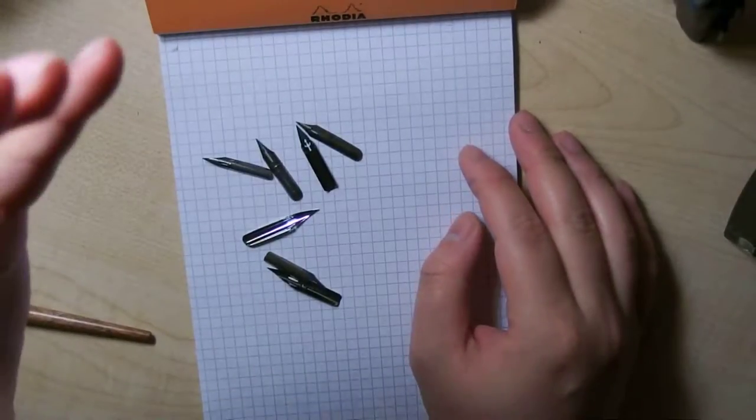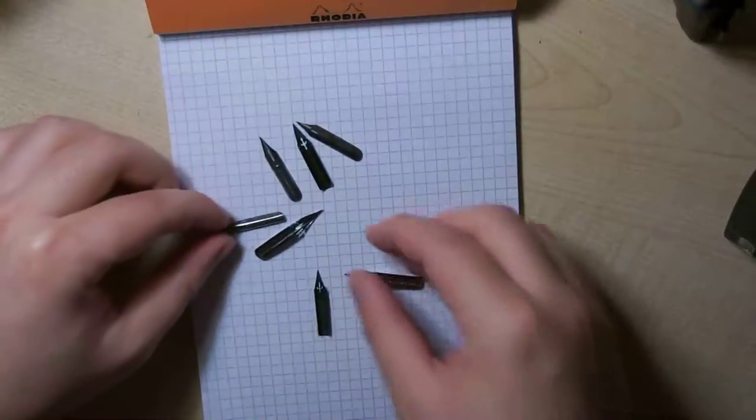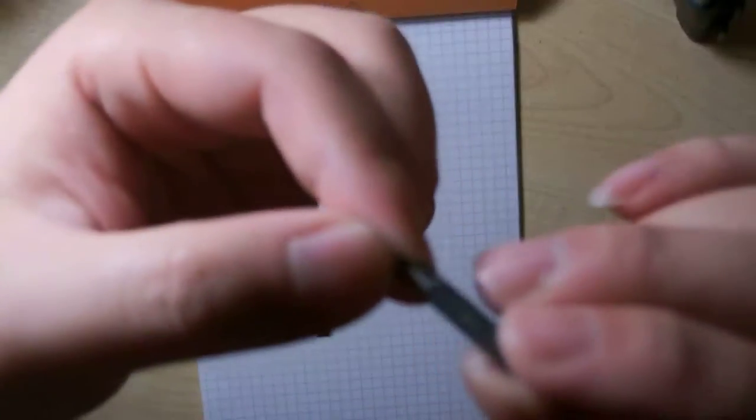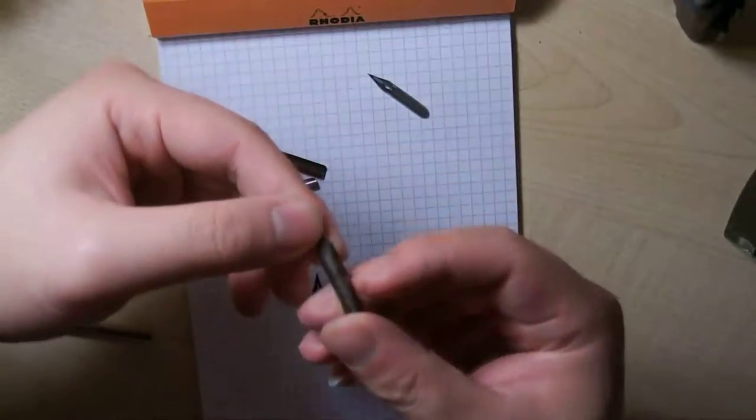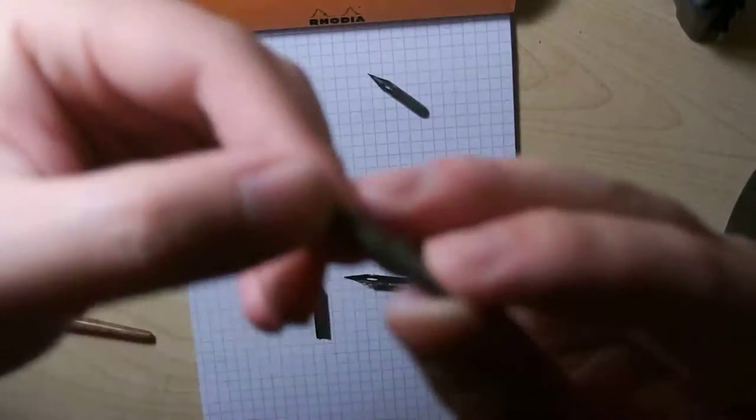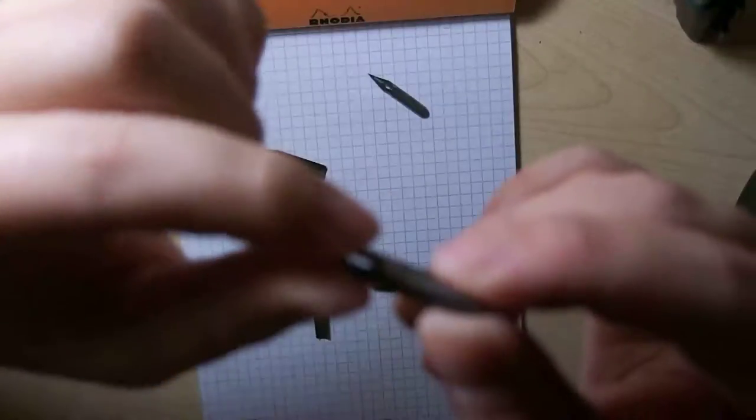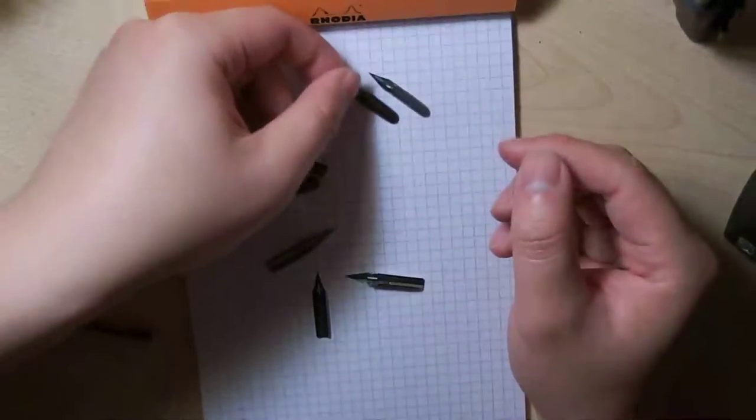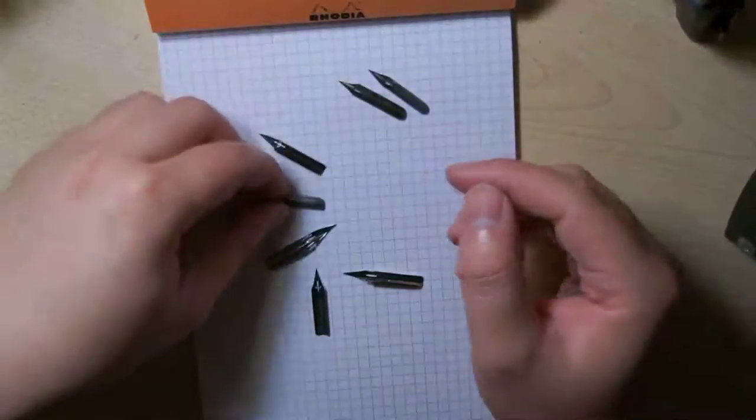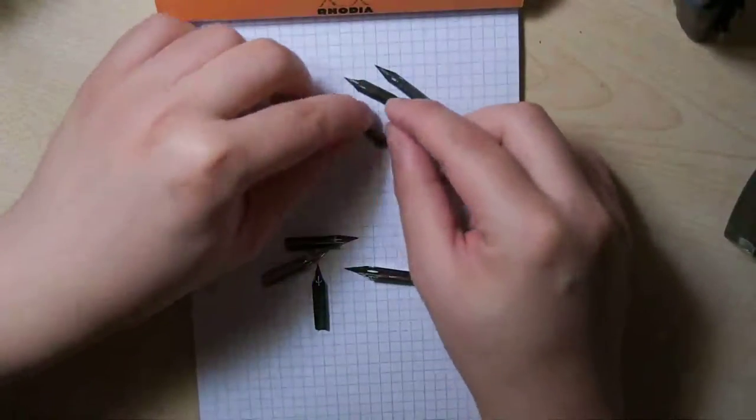These are some of the most popular dip nibs used today. First of all is my favorite, the Spencerian number one. This is a vintage nib and it's not being made today. Then it is the Gillott 303, this particular one is a vintage nib but they are making new versions of this one today and you can still buy them brand new. Same as this one here which is a Gillott 404, slight difference between the two I'll show you later.